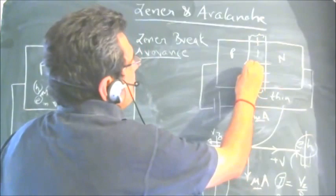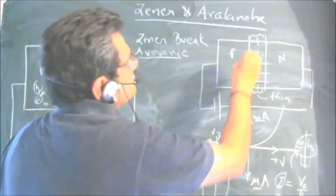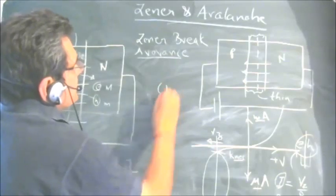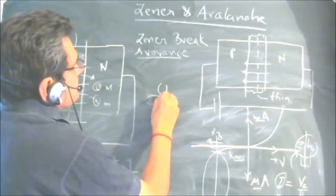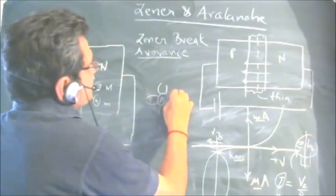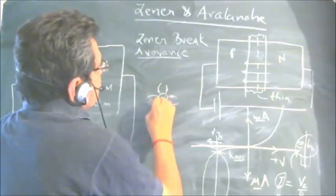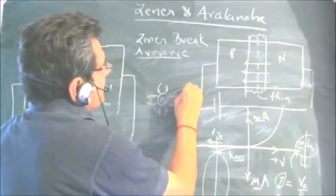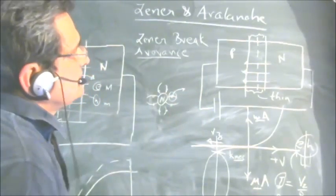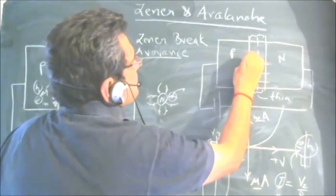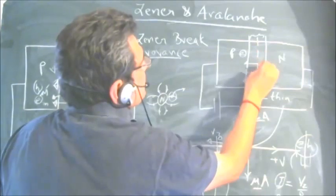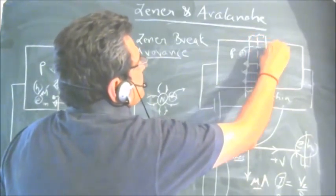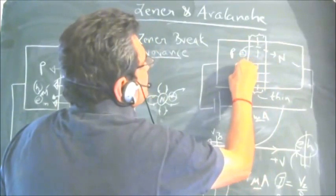Because of this high electric field, electrons are ruptured out from the covalent bonds. On the P side, electrons in the crystal bonds are pulled out by the high force of the reverse bias voltage. The liberated electron moves in the direction of the electric field and is collected on the N side.